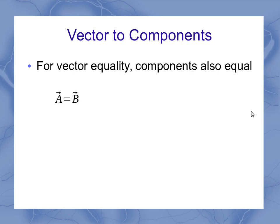So for example, if A and B vectors were both equal to each other, then their components had to be equal to each other. The x components and the y components each had to balance out so that the A and B components were exactly the same.